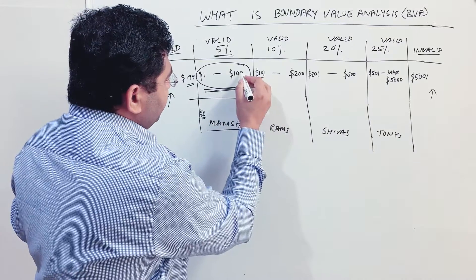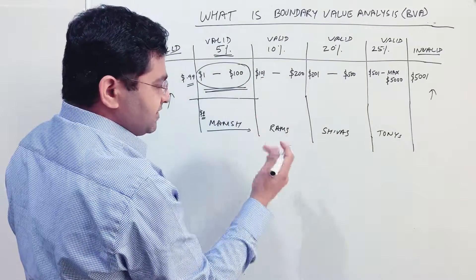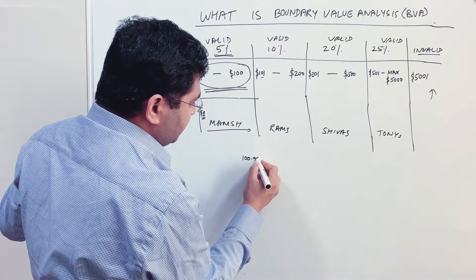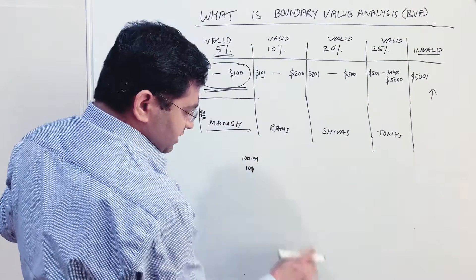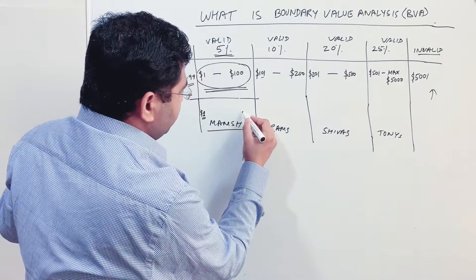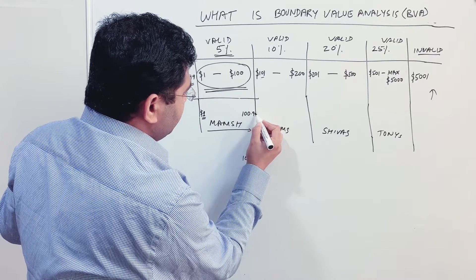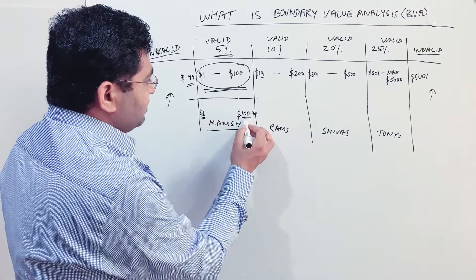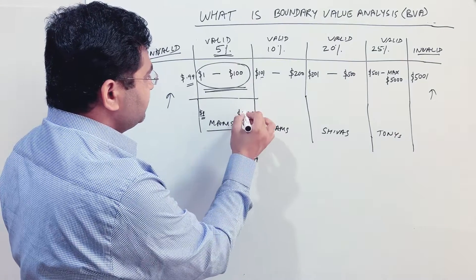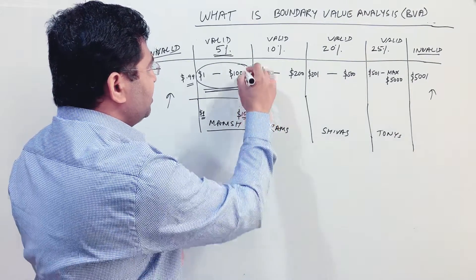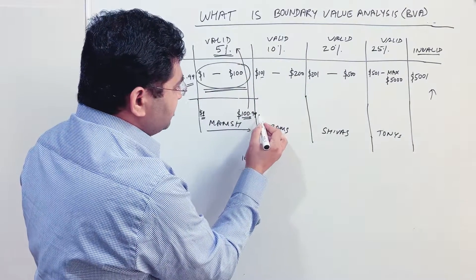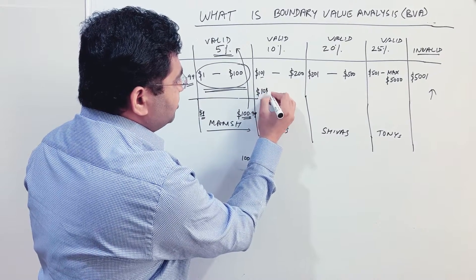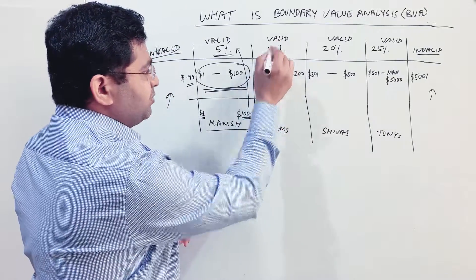If the software accepts up to two decimal places and doesn't round — for example, it accepts one hundred point nine nine and does not round it up to one hundred and one — then the highest boundary of that partition is one hundred point nine nine. As soon as the amount reaches one hundred and one dollars, that becomes the lower boundary of the ten percent discount partition.